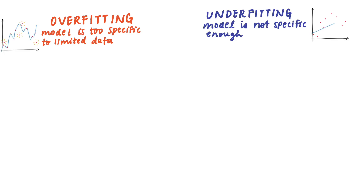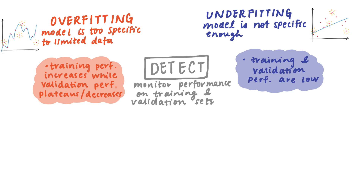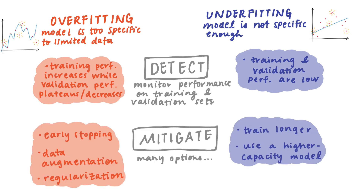Knowing about under and overfitting is super important in real life when developing or assessing ML algorithms. To recap: overfitting is when you learn a function that is too specific to a limited set of data, and underfitting is when the learned function is not specific enough. One way to detect under and overfitting is by tracking performance on both the training and the validation set while your model is being trained. Underfitting is usually resolved by training for longer or by using a more complex model. And there are a handful of mitigation techniques you can use to combat overfitting, including early stopping, data augmentation, and regularization.